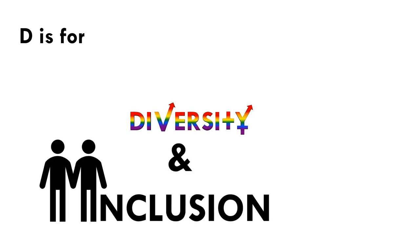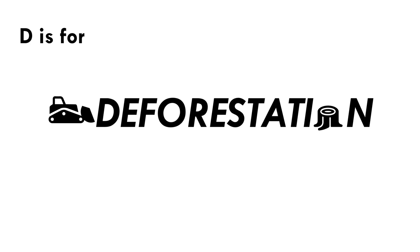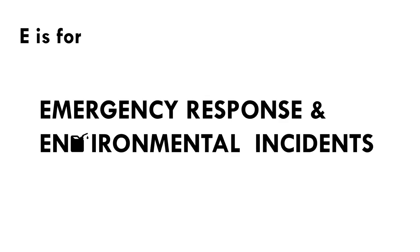D is for diversity and inclusion. ESG focuses on promoting diversity, equality, and inclusion within companies and society. Diversity encompasses aspects such as gender, race, ethnicity, age, and more. ESG-driven organizations strive to create inclusive workplaces that embrace diversity, provide equal opportunities, and foster a culture of respect and belonging. D is for deforestation — the clearing, removal, or destruction of forests, primarily caused by human activities such as agriculture, logging, and infrastructure development. One of the UN global goals aims to implement sustainable management of forests and halt forest loss.